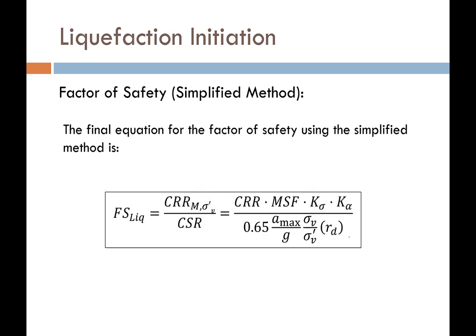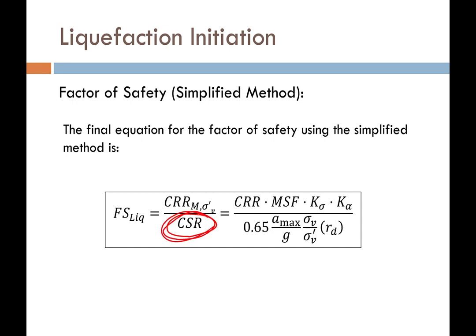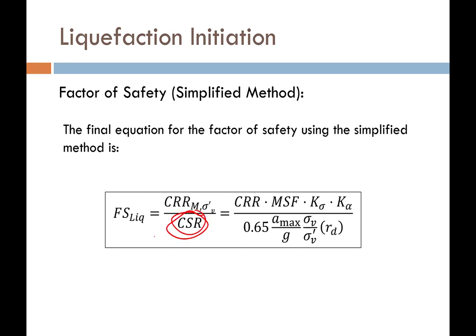The final CRR equation — for magnitude 7.5 and one atmosphere overburden — is: CRR times the magnitude scaling factor, times the overburden correction K-sigma, times the initial shear stress correction K-alpha if desired. Combining all the equations together in the simplified method, we arrive at the factor of safety equation. There are lots of different methods that give us different estimates of CRR and magnitude scaling factor. All these relationships help us compute, given a future seismic loading level quantified by CSR and our estimate of soil resistance, an estimate of the factor of safety that that soil will liquefy when exposed to that level of seismic loading.